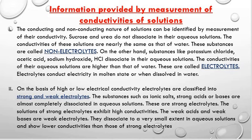Electrolytes conduct electricity in molten state or in aqueous state. On the basis of high or low conductivity, electrolytes are classified as strong and weak electrolytes. Substances such as ionic salts, strong acids, or strong bases are completely ionized in aqueous solution and are considered strong electrolytes — they exhibit high conductivities. Weak acids or weak bases are weak electrolytes; they dissociate into ions to a very small extent and show lower conductivities than strong electrolytes.